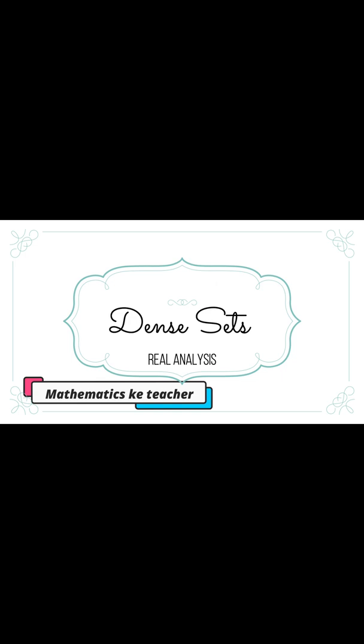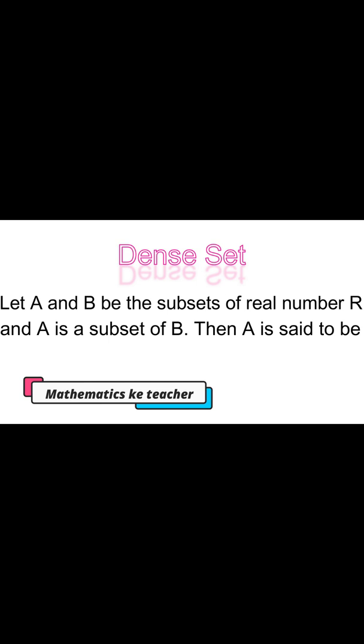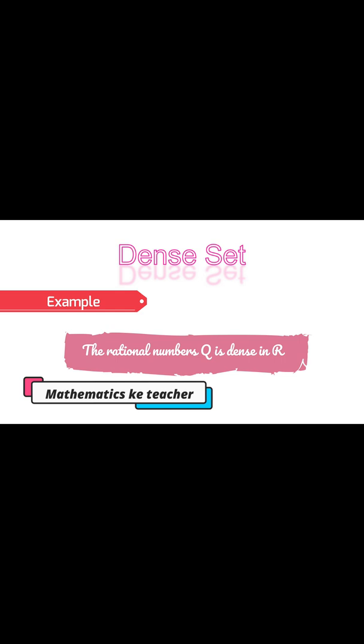Dense Set. Let A and B be the subsets of real number R, and A is a subset of B. Then A is said to be dense in B if B is a subset of the closure of A. The set of rational numbers Q is dense in R, the set of real numbers.